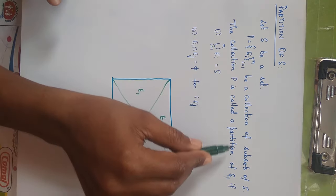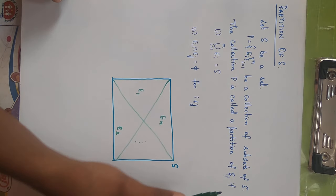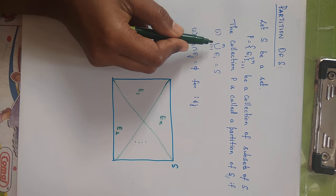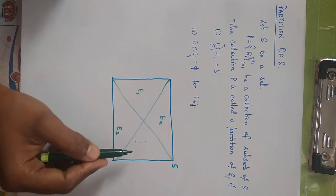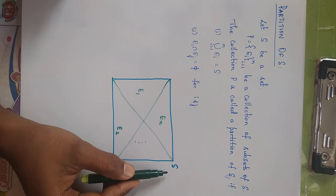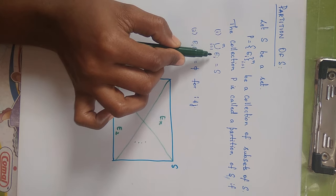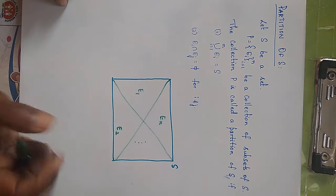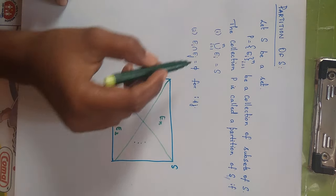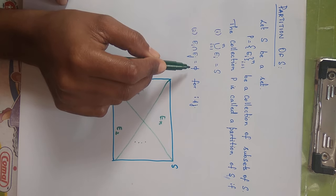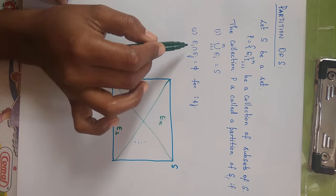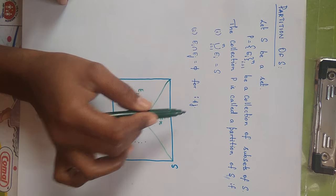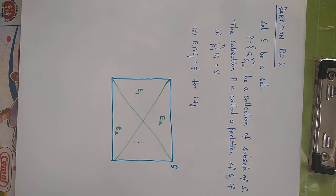This collection P = {Ei}, where i runs from 1 to n, is said to be the partition of S if it satisfies two conditions. One: when we take the union of these sub-events we have to get S, the entire sample space — that is, union of Ei where i runs from 1 to n equals S. Two: when we take two different events their intersection should not contain any element in common — Ei intersection Ej equals null for i not equal to j. This is the partition of S.